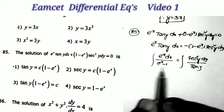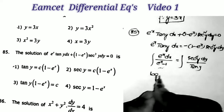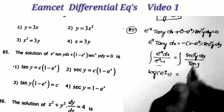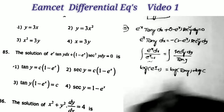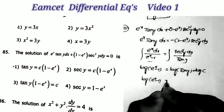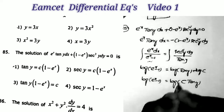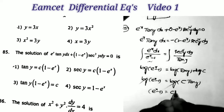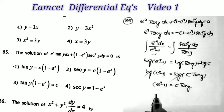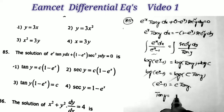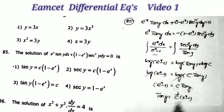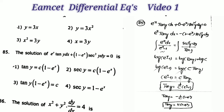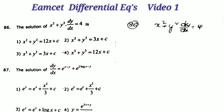The left side is f'(x)/f(x) form since the derivative of e^x−1 is e^x, so the integral is log(e^x−1). The right side, sec²y/tan y is also f'(x)/f(x) form, giving log(tan y) + log c. Therefore log(e^x−1) = log(c·tan y), so e^x−1 = c·tan y. Checking options: tan y = c(e^x−1), or equivalently tan y = k(1−e^x) where k = −1/c.